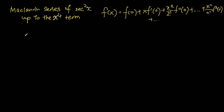Hi guys, my name is Bob. In this video I am going to show you how to find the Maclaurin series of secant squared x up to the x to the power of 4 term using the top right-hand corner equation. The top right-hand corner equation shows that the function can be expressed as an infinite series called the Maclaurin series.